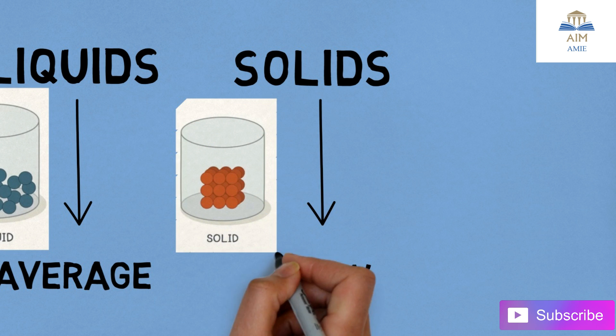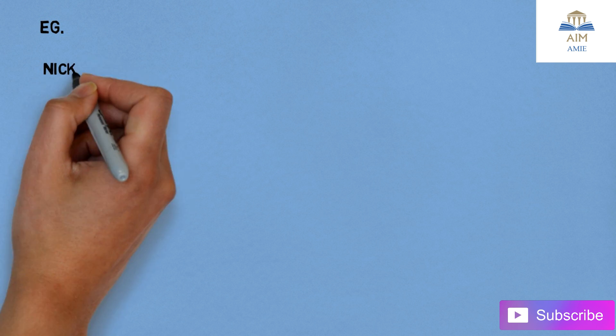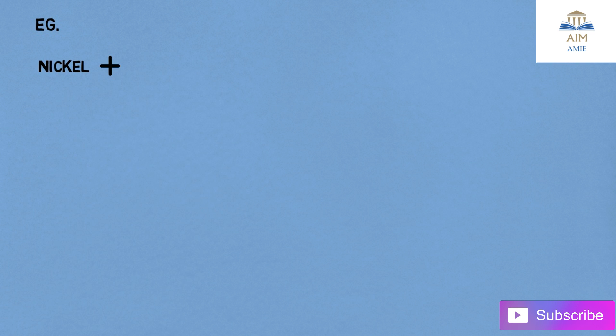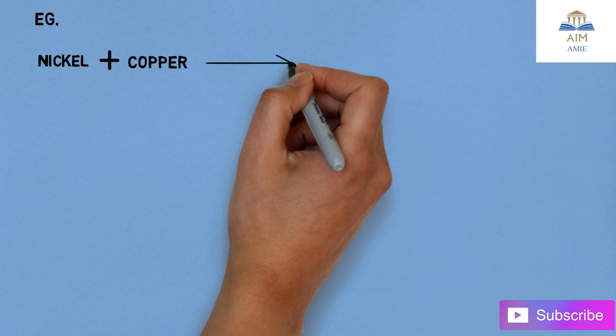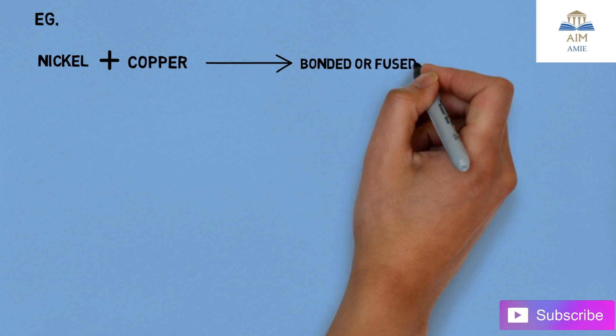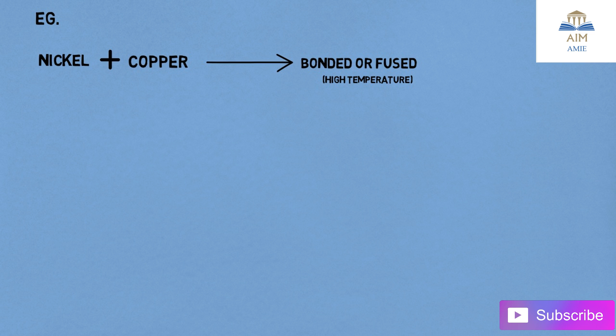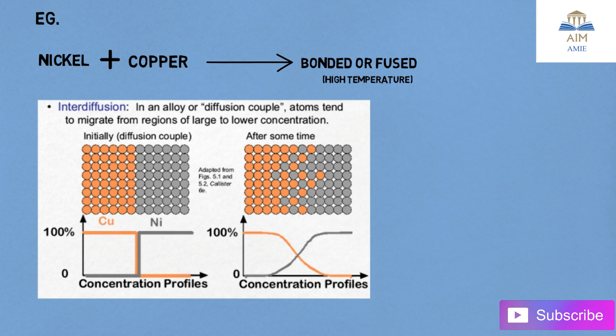For example, nickel and nickel plus copper. These are diffused together, bonded or fused together. You have to heat that particular nickel and copper at higher temperature. In this image you can see that the copper and nickel atoms get uniformly distributed.